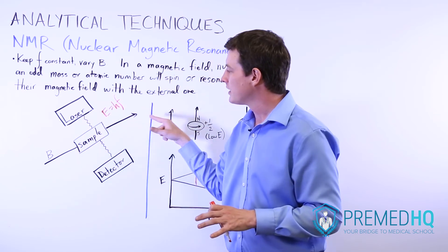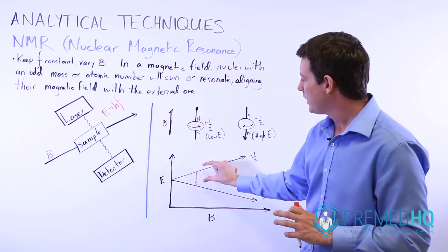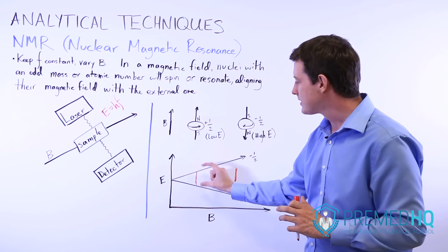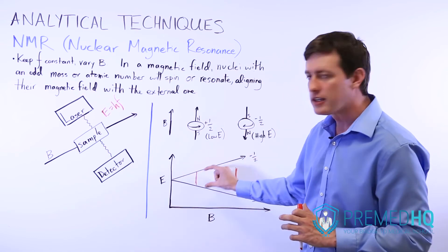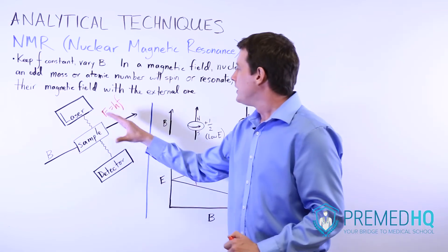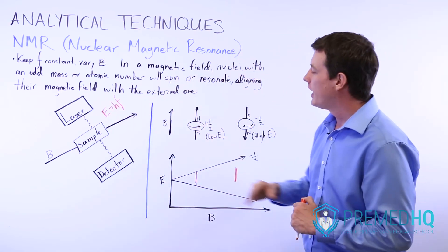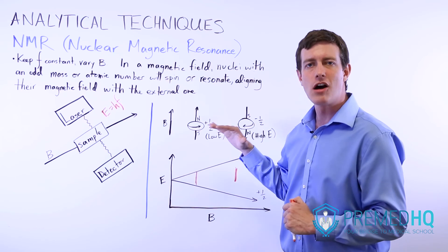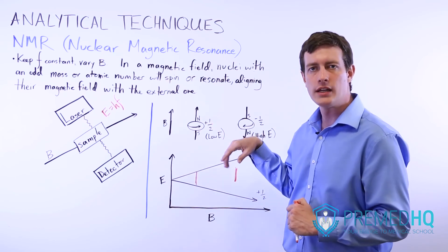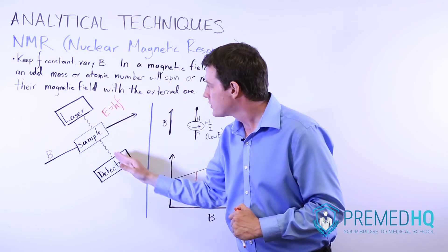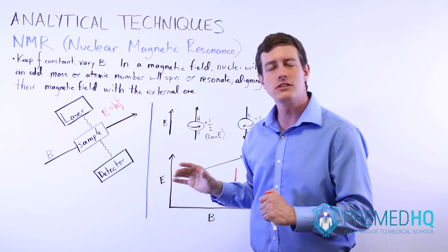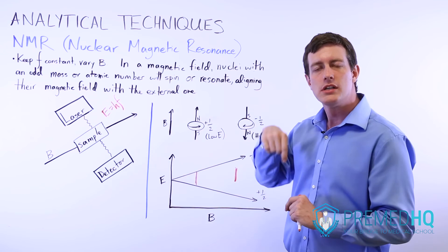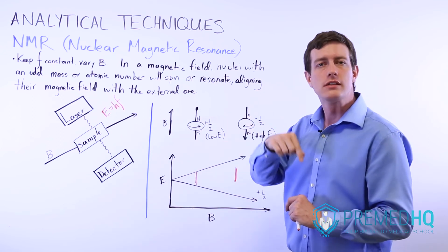And so as you vary this external magnetic field, then you're going to get to a point where the energy levels between the one spin state and the other spin state are the exact level where the energy of that photon can cause it to flip. And so that's essentially how NMR works—you have an external magnetic field that causes any odd mass number or odd atomic number nucleus to spin in one way, and then you're shooting through a laser of a constant frequency and changing this field until you get to the point where the energy of that laser is exactly the right amount to turn it from spinning one way with the external field to spinning the opposite direction.